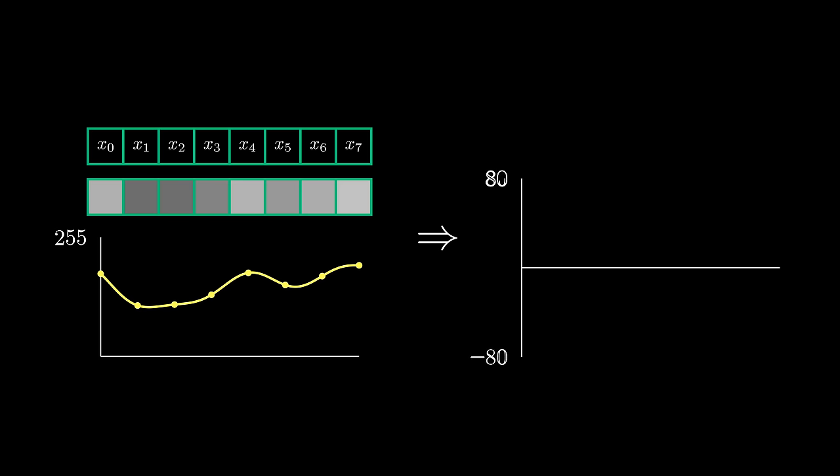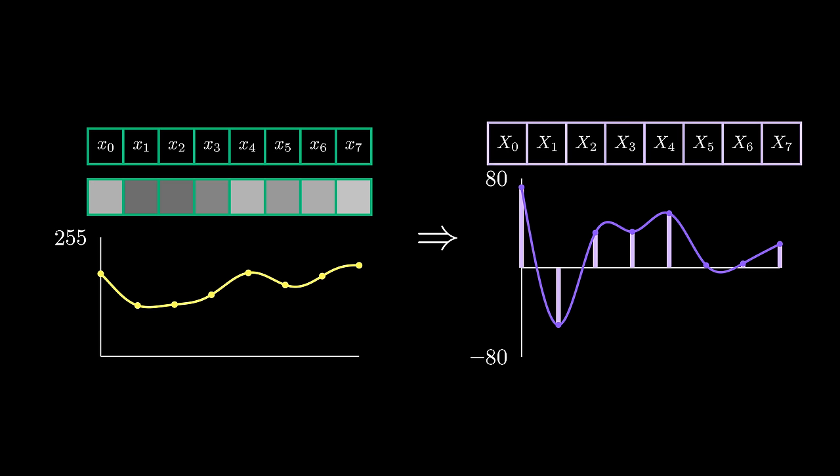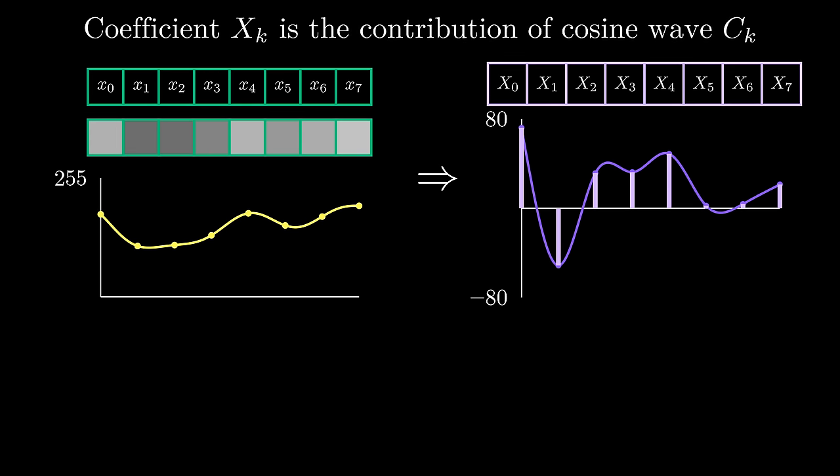This is where some particularly clever and beautiful math comes into play. The answer lies in a special operation called the discrete cosine transform, or the DCT. The DCT works for any size input, but to simplify things, let's focus on an input of 8 pixels. Just as we did earlier, let's suppose these 8 pixels form some sort of signal. The clever and definitely not obvious idea of the DCT is to represent these 8 points as sums of sampled points from cosine waves.